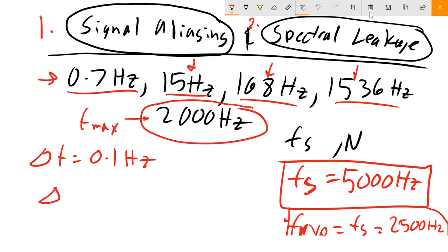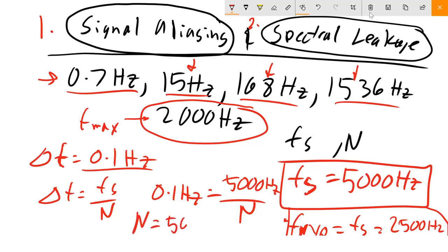We also know delta F is FS over N. We've chosen our delta F, our fundamental frequency resolution to be 0.1 Hz. I'm going to plug that in: 0.1 Hz. We also chose previously our FS is 5000 Hz. Now we can solve for how many number of points we need to obtain this frequency resolution. Doing a little bit of math, you'll see that N is 50,000 points.